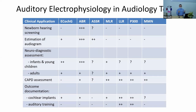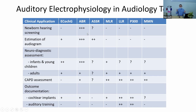This large table summarizes different auditory electrophysiology applications in audiology today. The first column is clinical application; the other columns are different types of auditory evoked potentials. The first application is newborn hearing screening, and the main test for this is ABR — specifically, the automated ABR, or AABR.